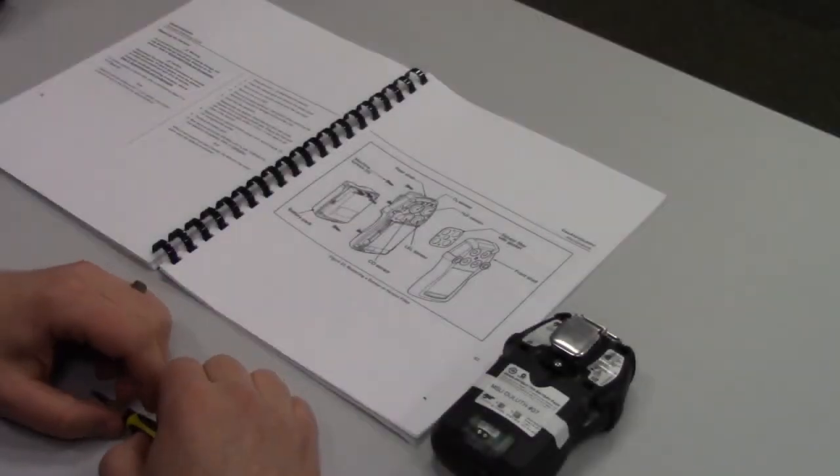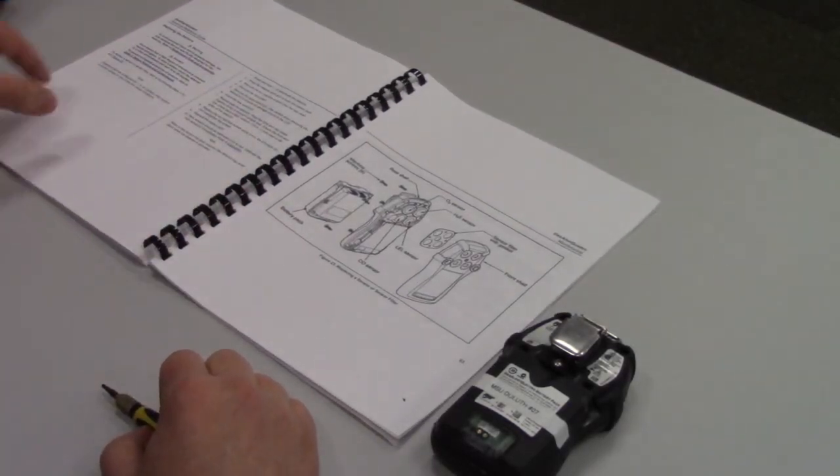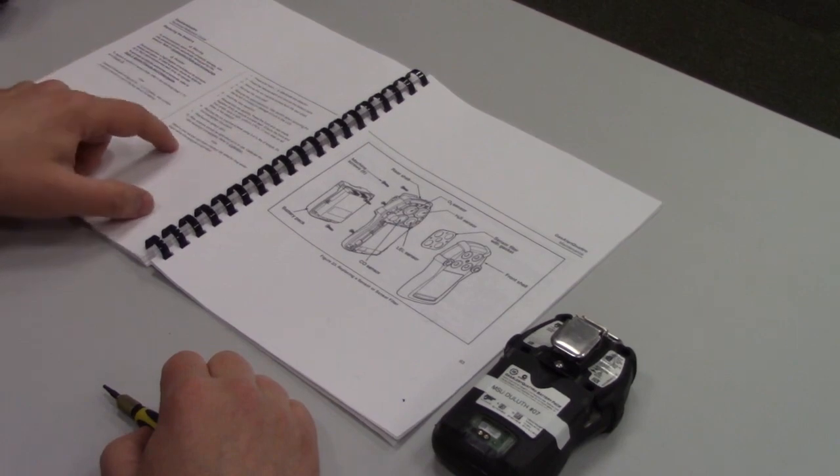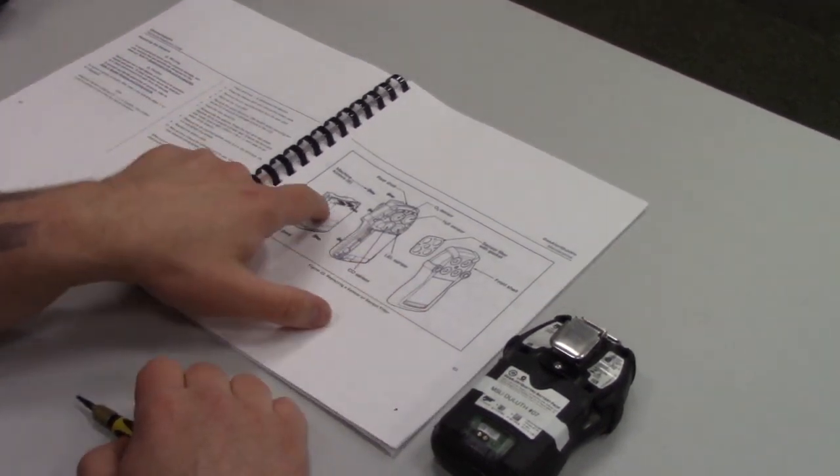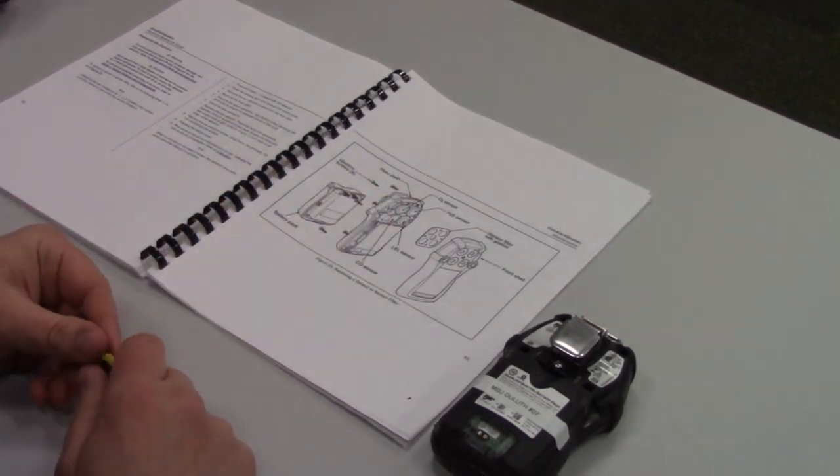The first thing you're going to want to do is take out your manual, turn it to page 62 which has all the instructions on how specifically to do this, and then page 63 has got a diagram of the meter with all your different sensors and their placements.